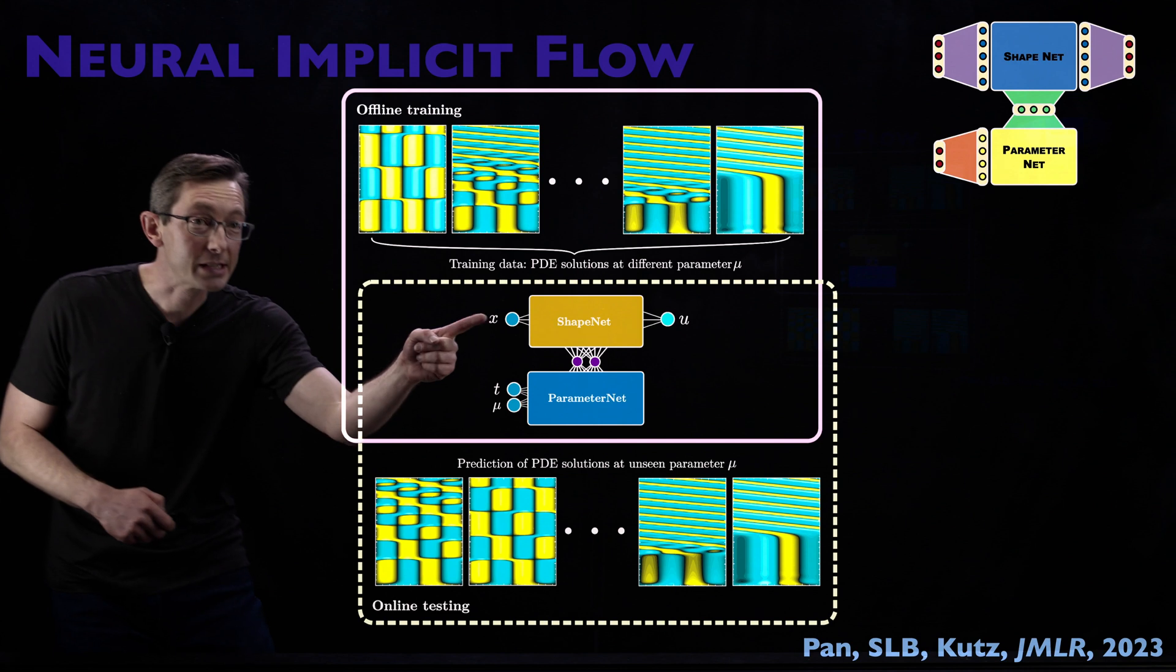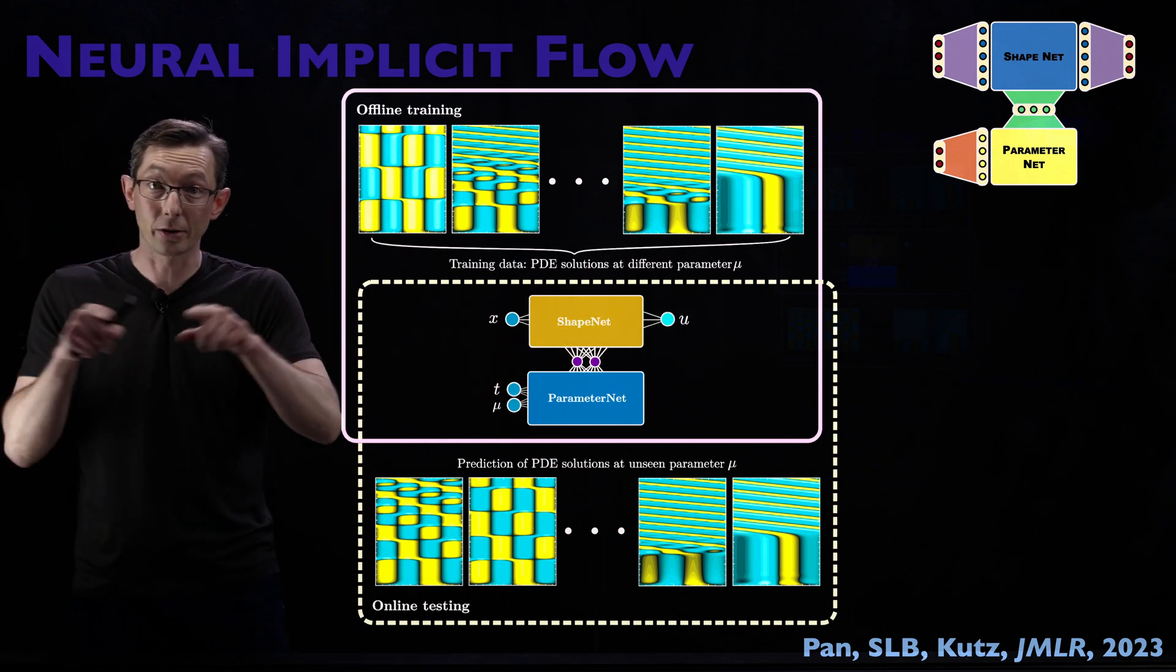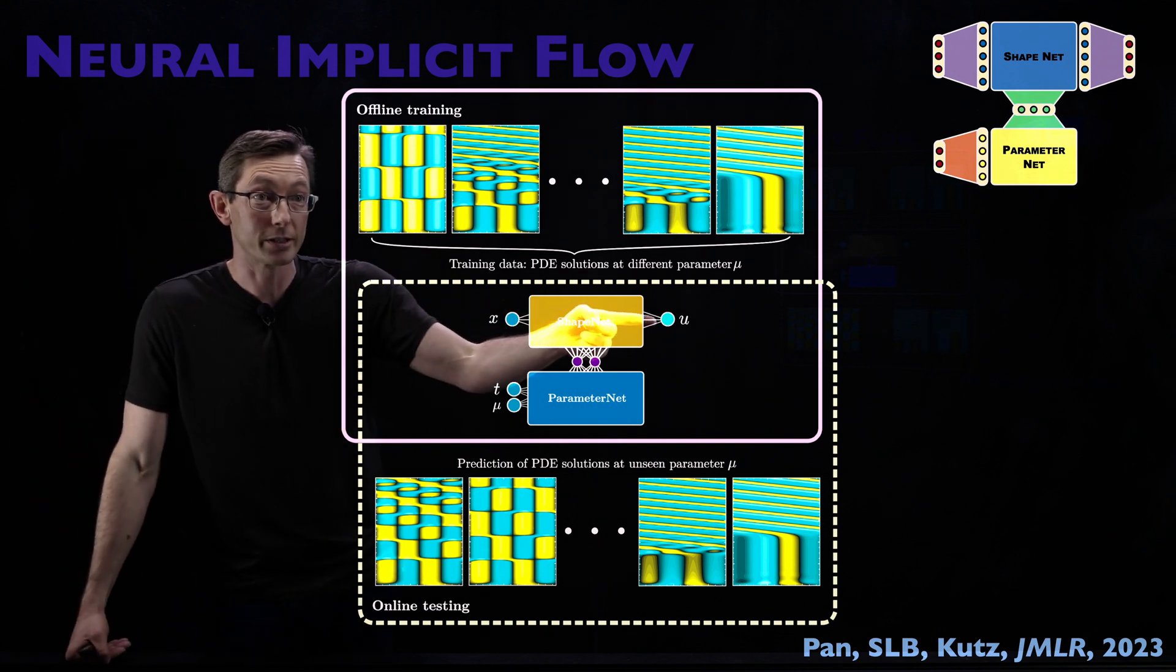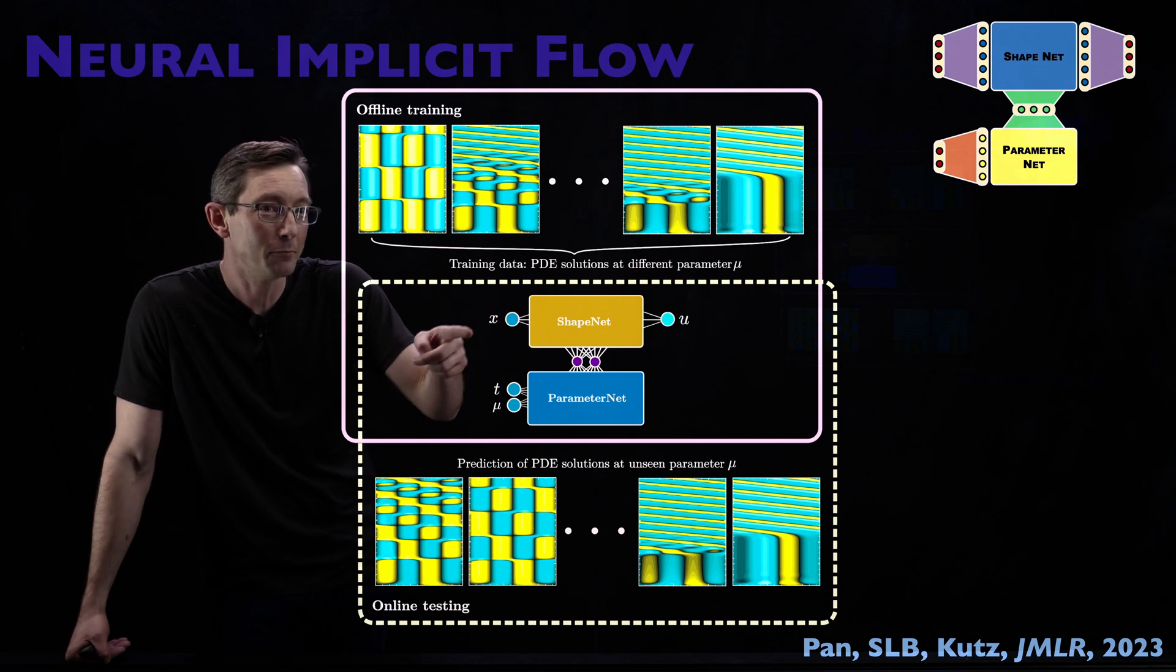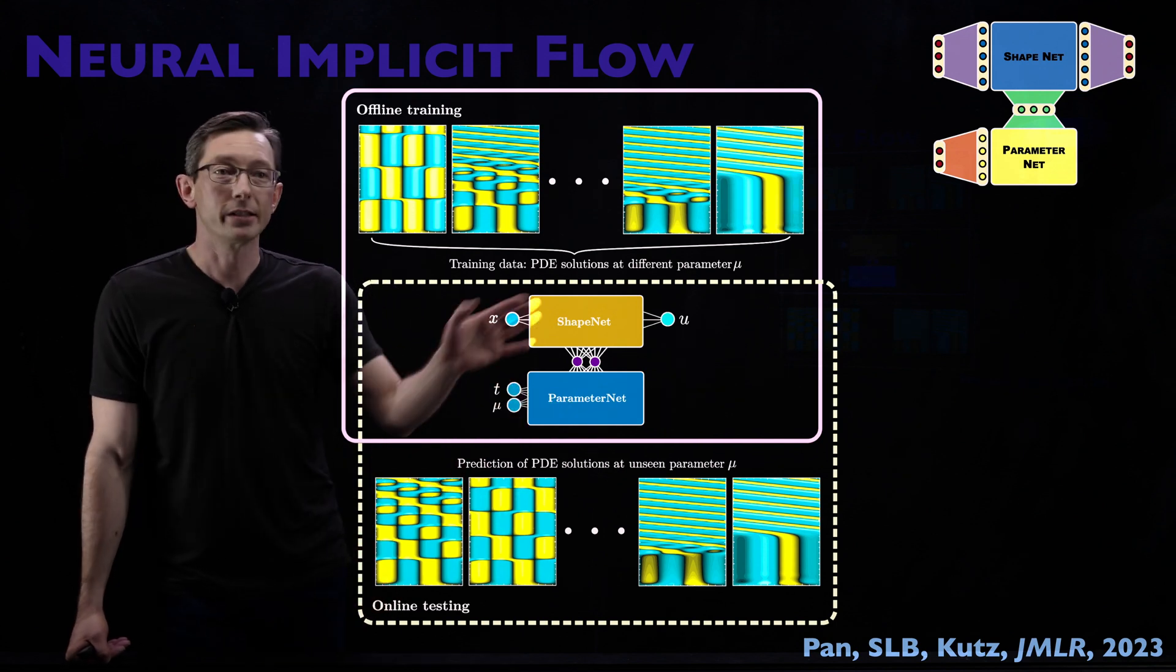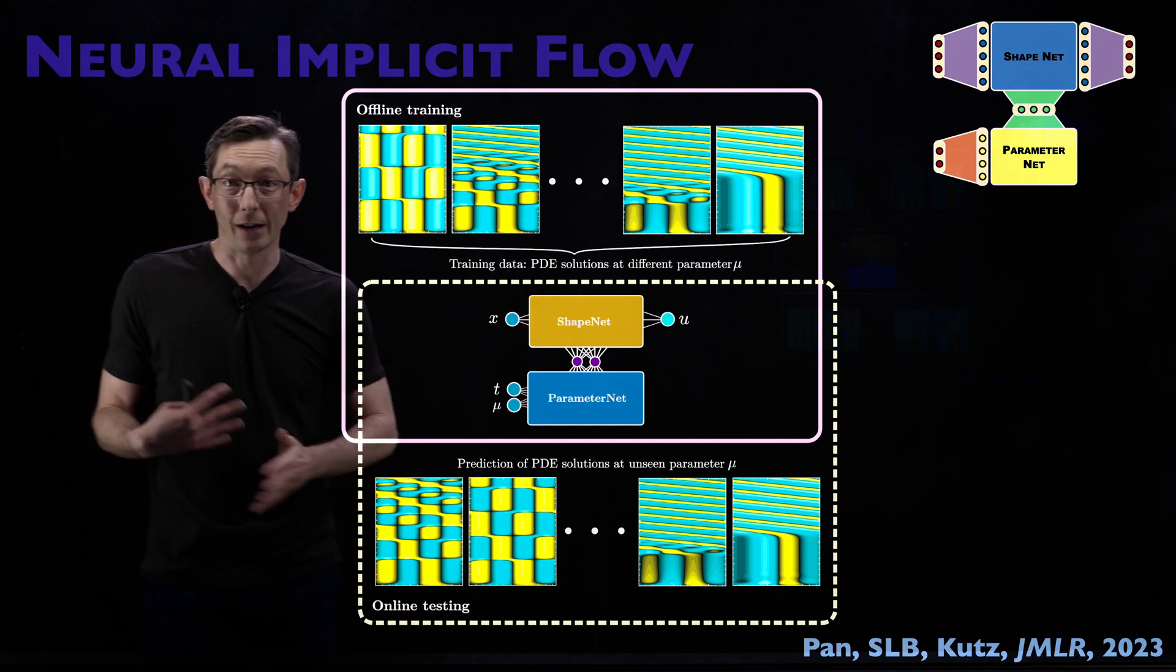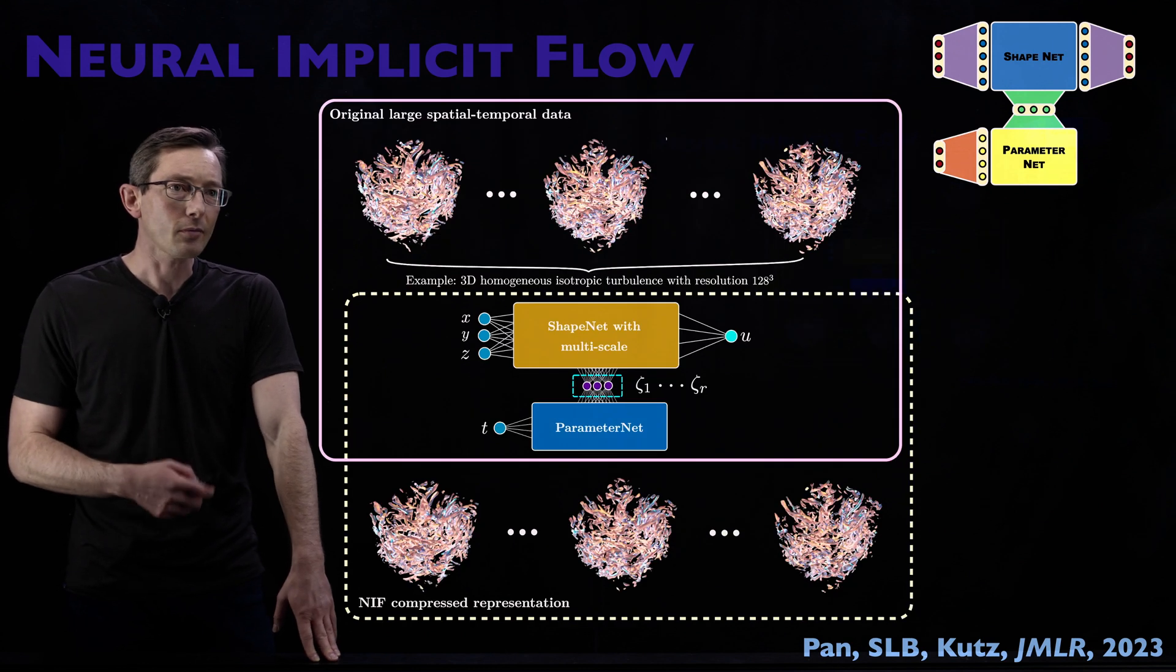So this is, and you'll see that the Shape Net then starts to look a lot like the neural network that you would use in a PINN architecture. You're just modeling your solution u as a function of space x, except now I've moved time down here to this auxiliary Parameter Network. So shape functions up here, and all of my other exogenous or external variations down here.